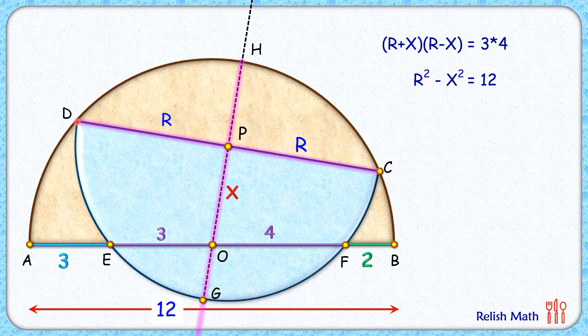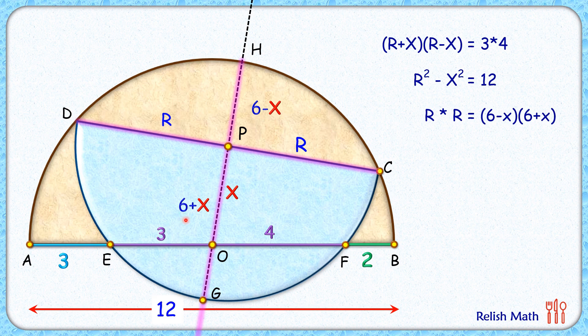As per power of point theorem, DP times PC, that is R times R, equals HP. HP is the full radius of brown semicircle minus X. The radius of brown semicircle is 6 cm so HP length is 6 minus X. The length below point O is the radius of brown semicircle or 6 cm plus PO, so that's 6 plus X.